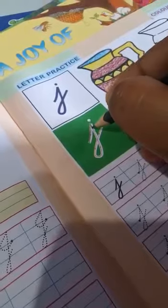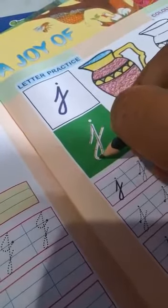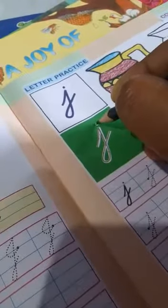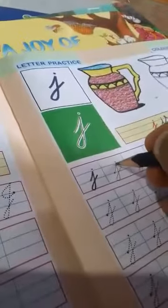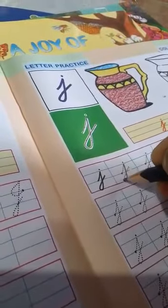Small J in cursive is just like a small J in print script. You all know how to write in small letters.